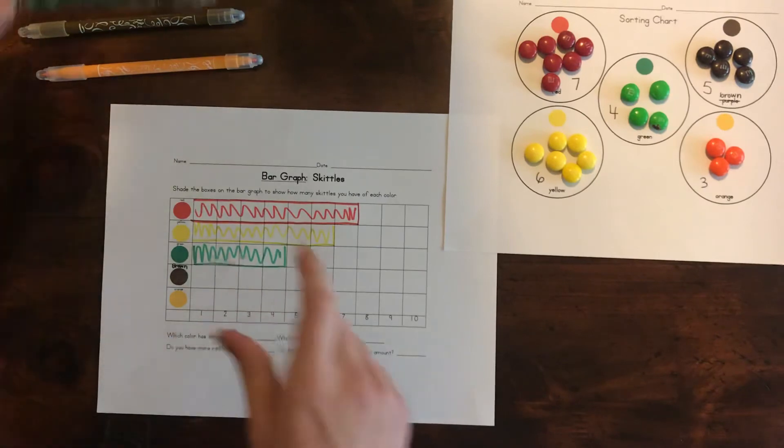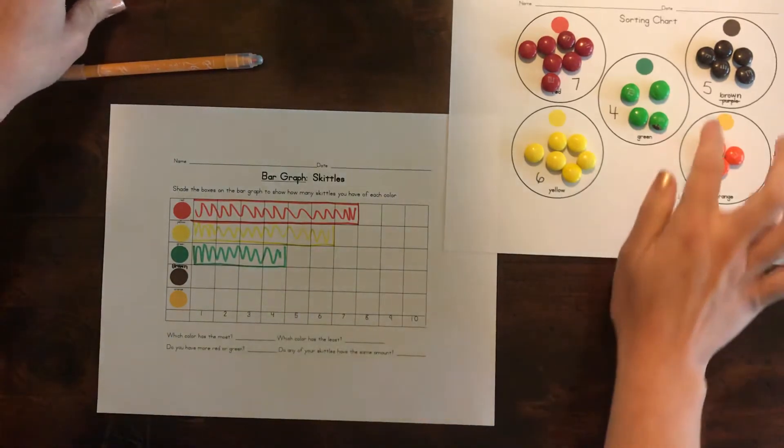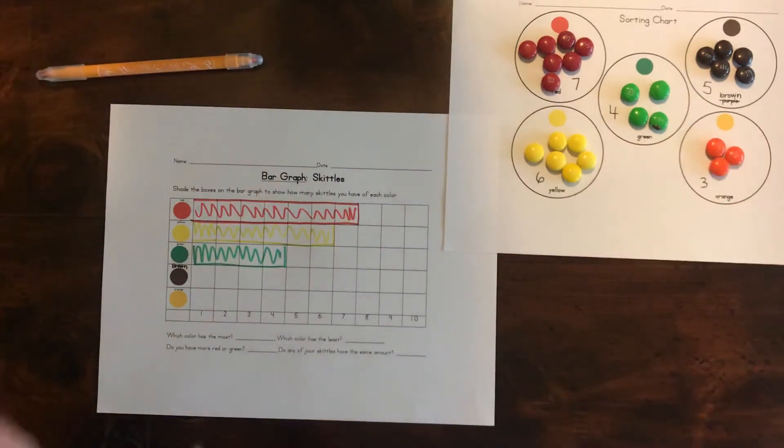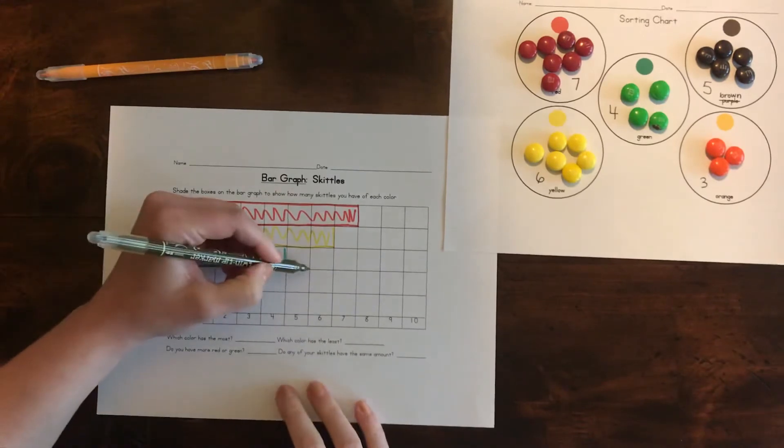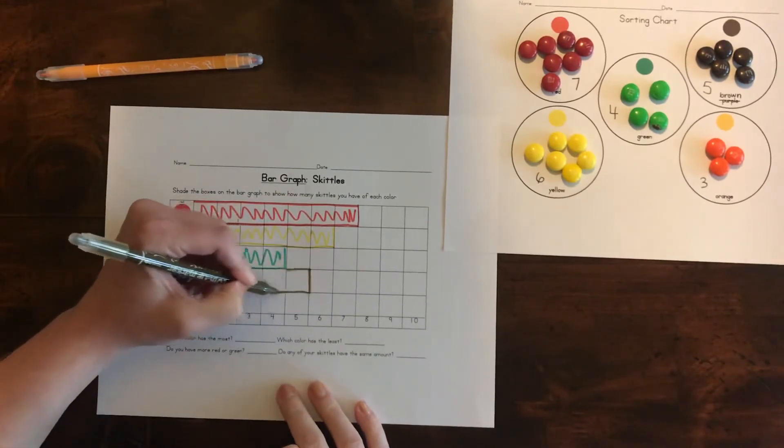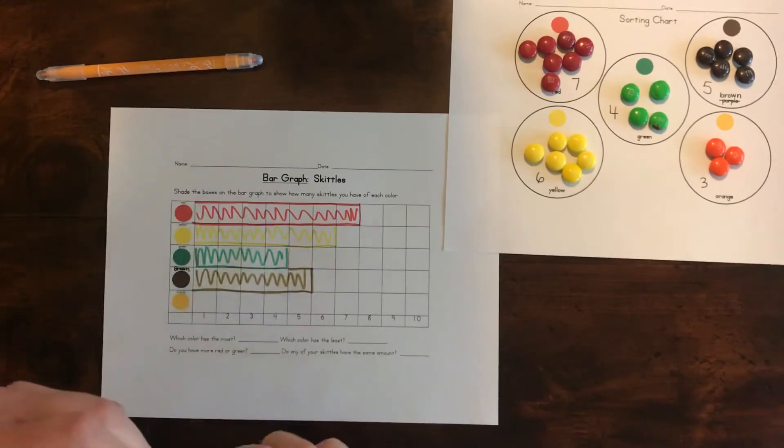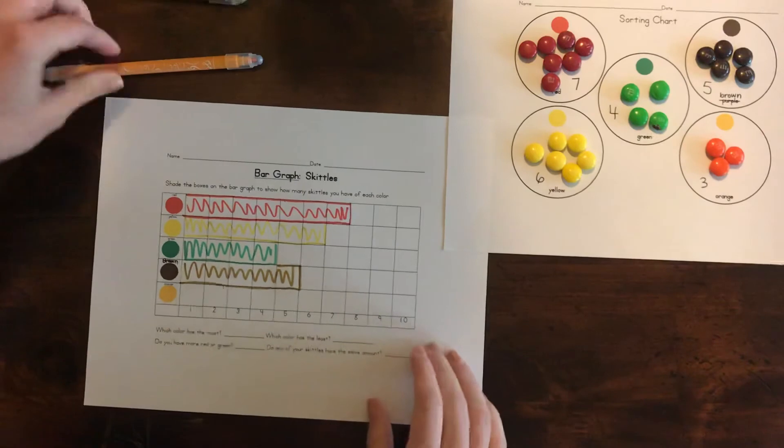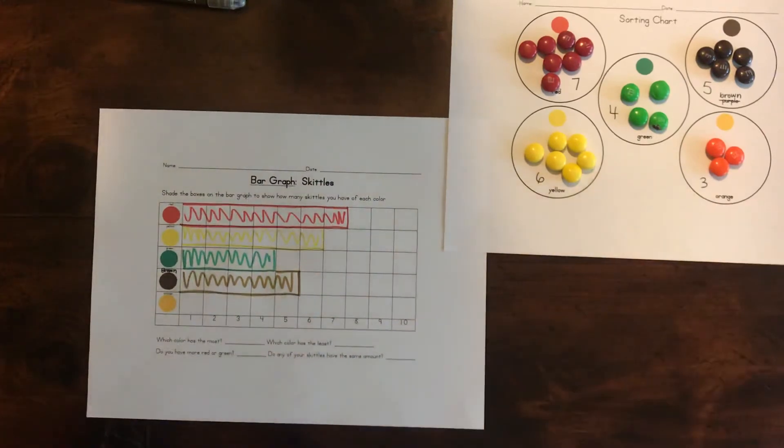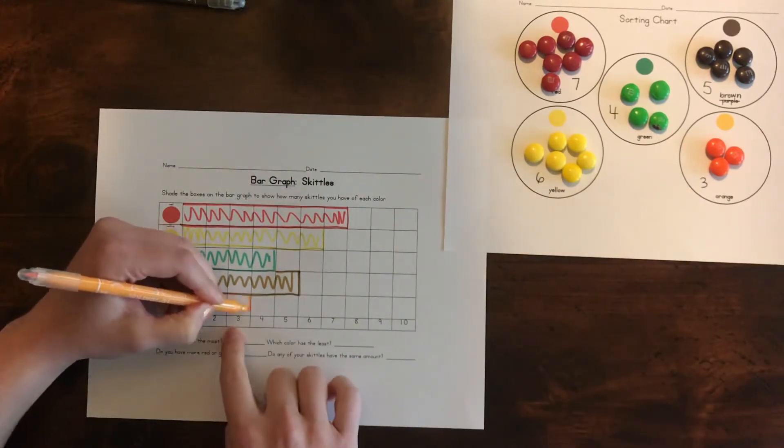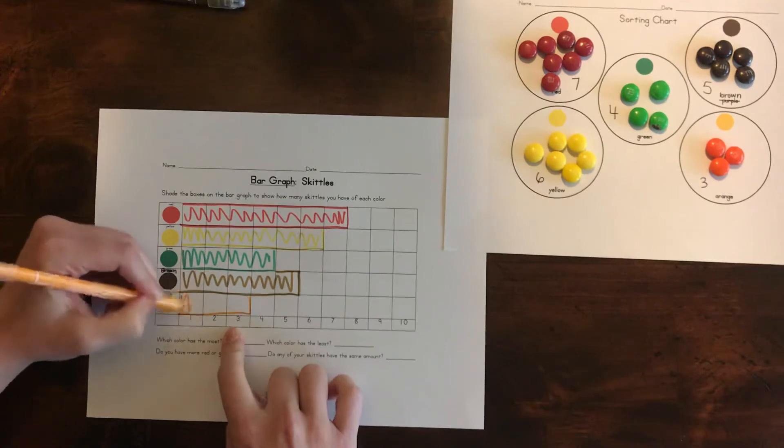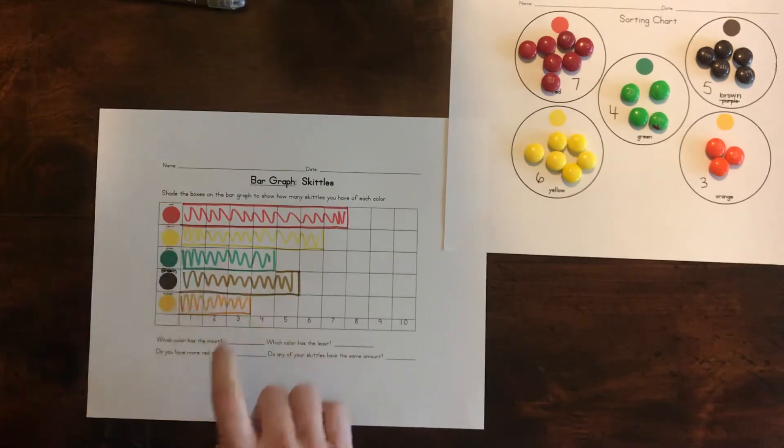Next is brown. And we have five of the brown. And last is orange. We had three orange. So we go to the three. We make our bar and color it in. So that is a bar graph.